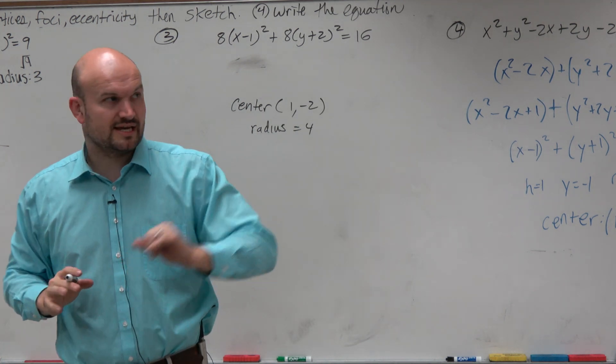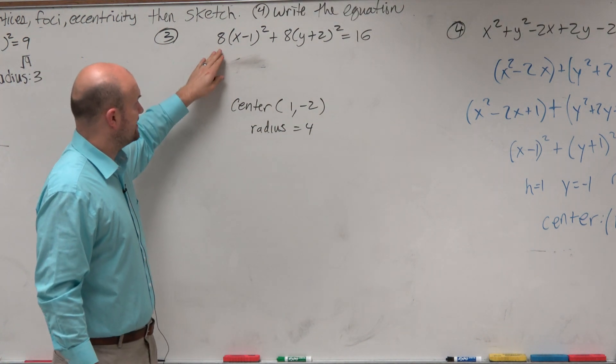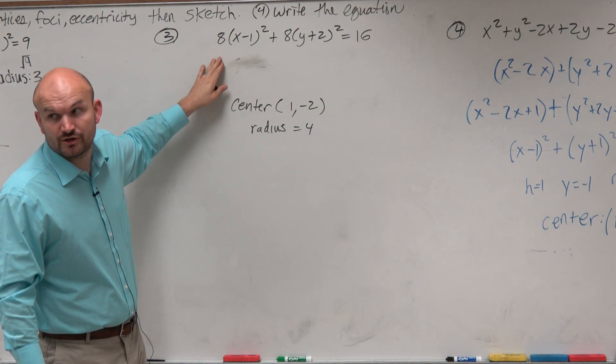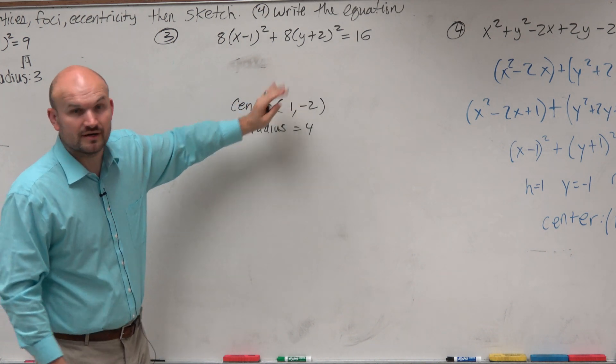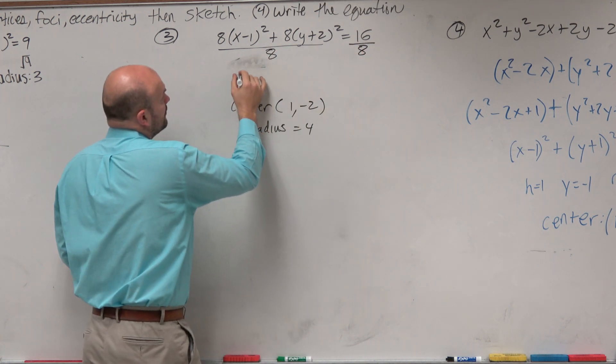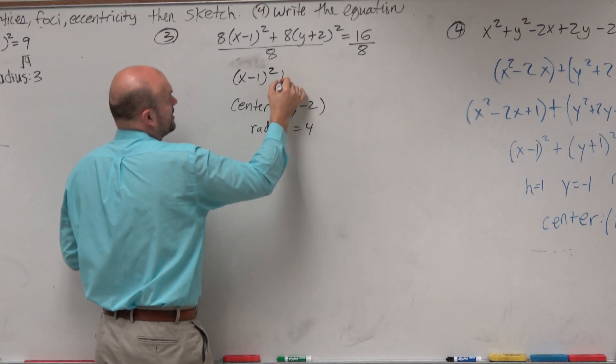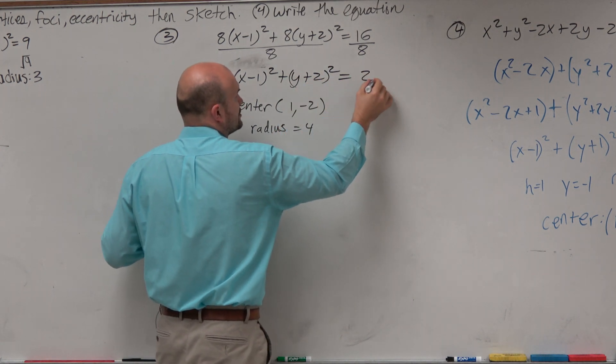But you have to be careful in this case. Because if you look at the standard form of a circle, we don't have any number in front of your x² and your y². That means we need to get rid of these 8's in front of here. So to do that, we are just going to divide by 8 on both sides. When doing that, we get (x-1)² + (y+2)² = 2.